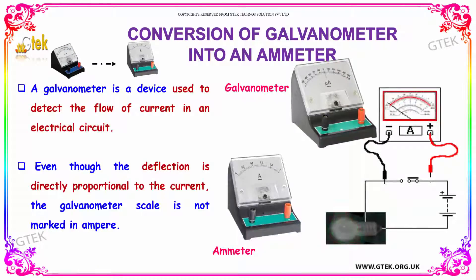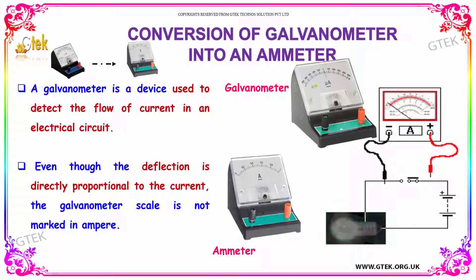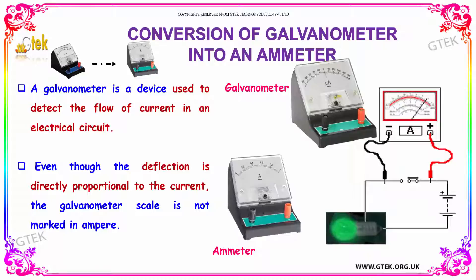Conversion of galvanometer into an ammeter. A galvanometer is a device used to detect the flow of current in an electrical circuit. Even though the deflection is directly proportional to the current, the galvanometer scale is not marked in amperes.